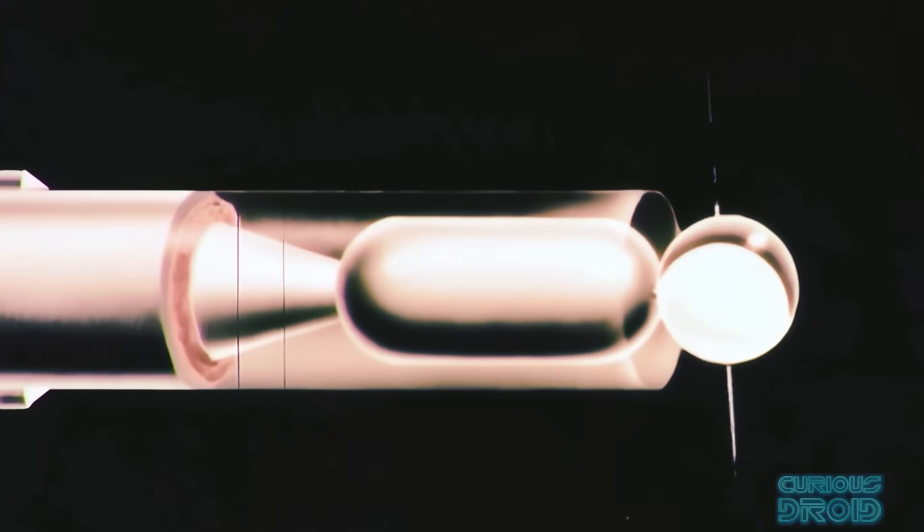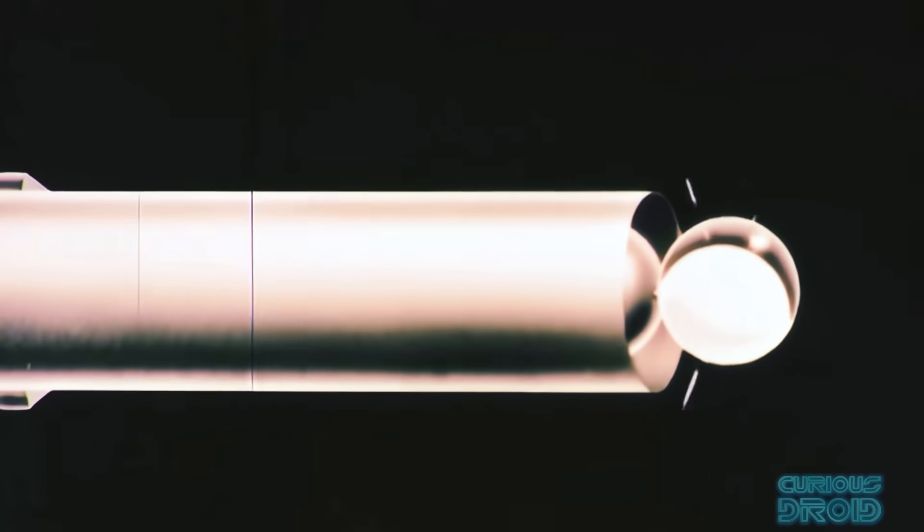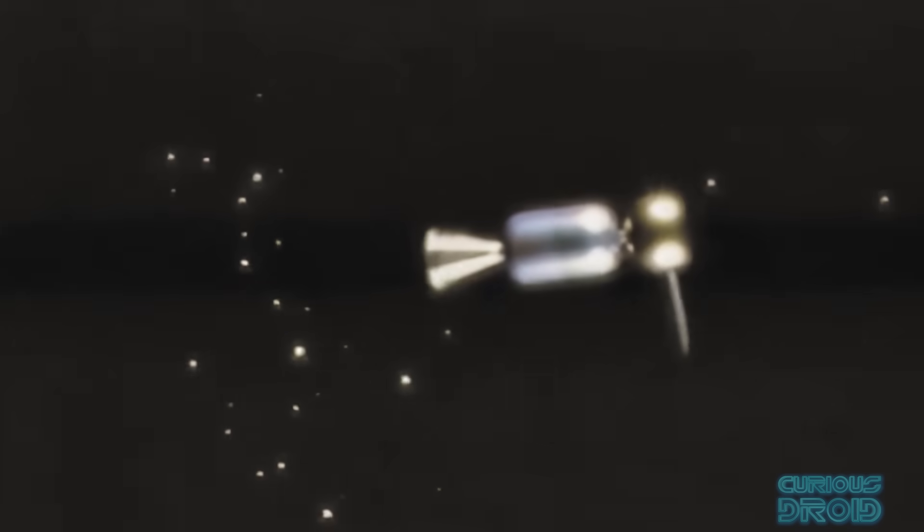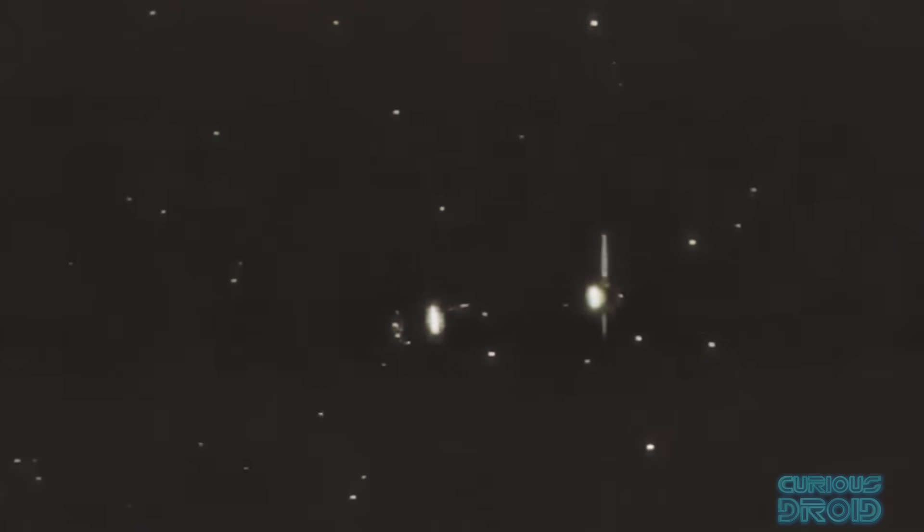Vanguard 1 was the first US satellite to orbit the earth and only the fourth to be launched. It was also the first to have solar power, and yet unlike Sputnik which burned up on the 4th of January 1958, Vanguard 1 is still up there nearly 67 years later after its 90-day planned mission was over. It actually kept transmitting for over 6 years in total.